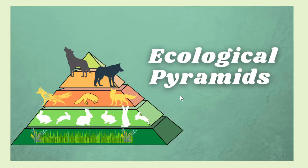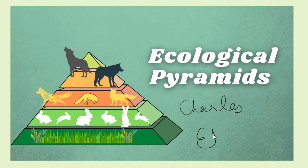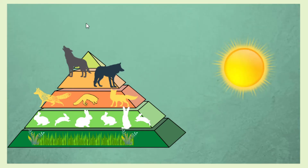The idea of ecological pyramids was first developed by Charles Elton, and hence these ecological pyramids were also referred to as Eltonian pyramids. The first type of ecological pyramid is the pyramid of energy.